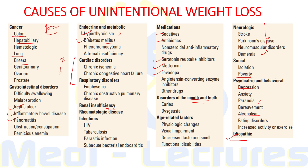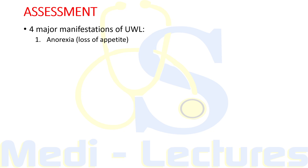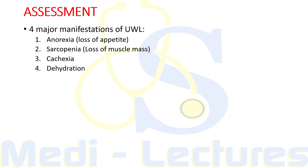Now let's come on to the assessment of the patient. The four major manifestations of weight loss are: anorexia, which is loss of appetite; sarcopenia, which is loss of muscle mass; cachexia, a syndrome that combines weight loss, loss of muscle, loss of adipose tissue, anorexia, and weakness; and finally dehydration. The current obesity epidemic adds complexity, as excess adipose tissue can mask the development of sarcopenia and delay the awareness of cachexia.